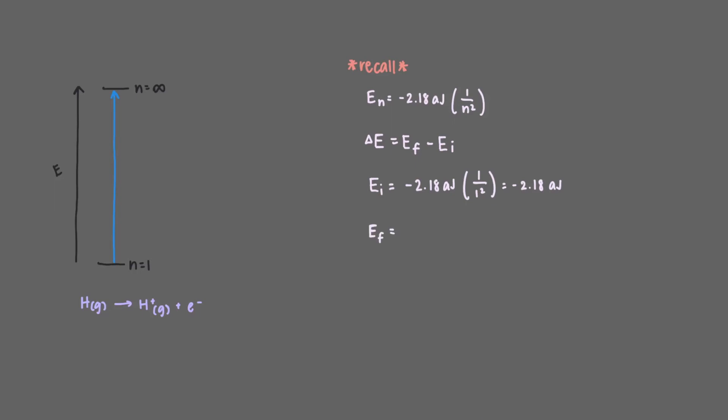Now let's solve for E final. Our n final is infinity, and anything divided by infinity is 0, so E final equals 0. Delta E equals E final minus E initial, so delta E equals 2.18 times 10^-18 joules.